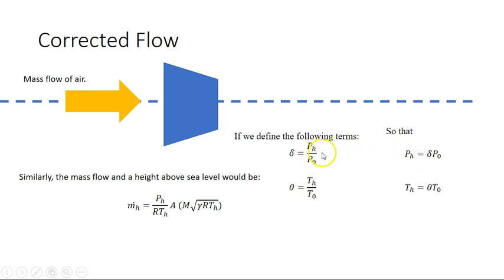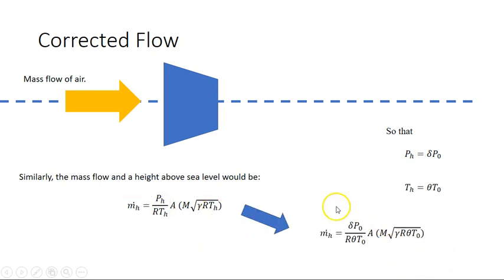We're just going to rearrange those to get a value for the pressure at the altitude, so it's δ times P₀, and T_h just becomes θ times T₀. So we're going to take those two values and substitute them in here. Instead of P_h you get δP₀, instead of T_h we get θT₀, okay, in these two places.